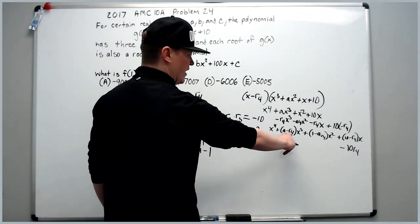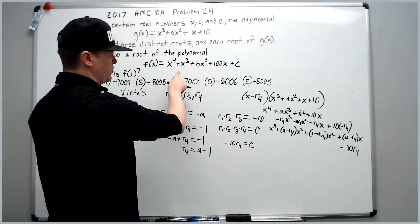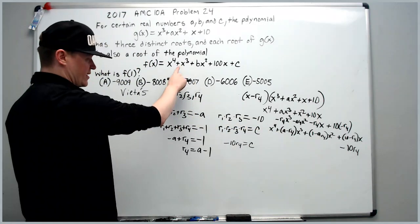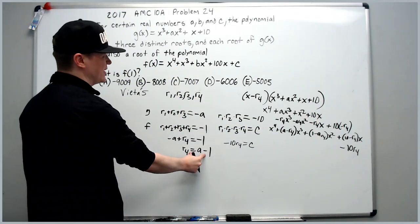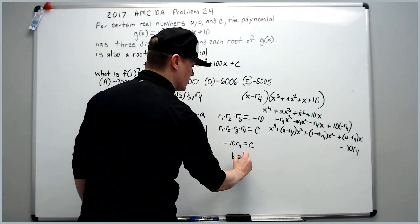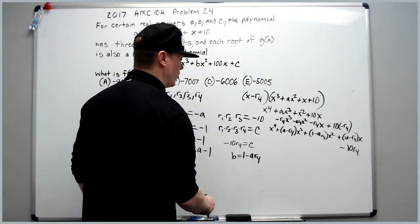Okay, let's compare. If you compare this to over here, you'll get the same thing that a minus r4 is equal to 1, which is equivalent to this. When you solve for b, you will get b equals 1 minus a r4. No help there.